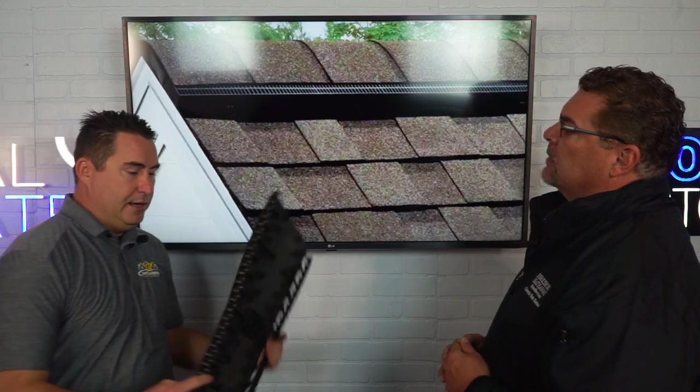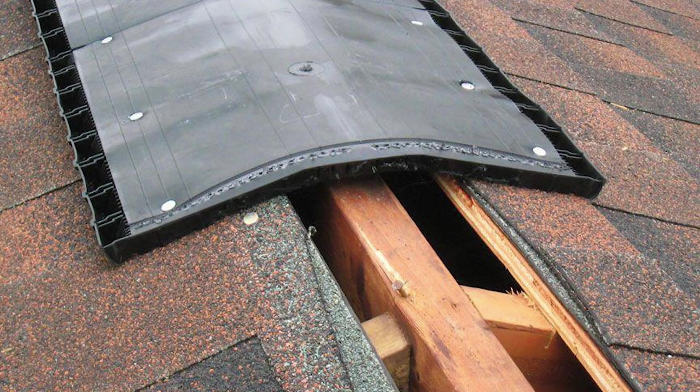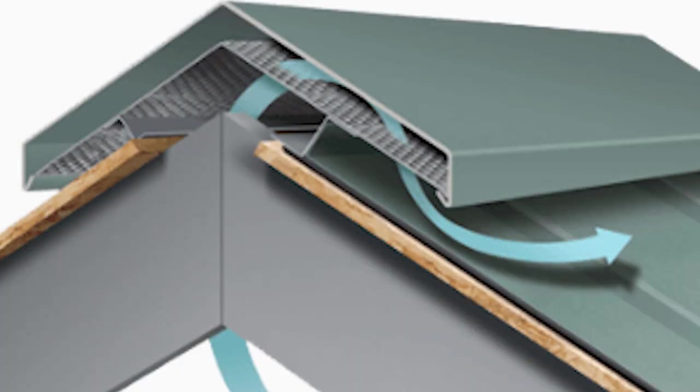Turtle vents can be bulky and don't hold up as well, so a newer technology is the ridge vent. The ridge vent sits right at the top of the ridge. Since heat rises, placing the vent at the very tip top maximizes efficiency. There's typically a four-inch cut — two inches on each side — and these vents run 20 or more feet depending on the length of the ridge.